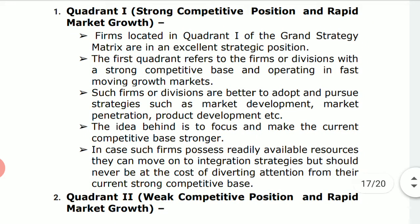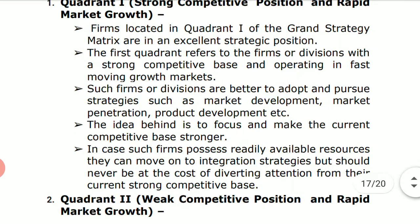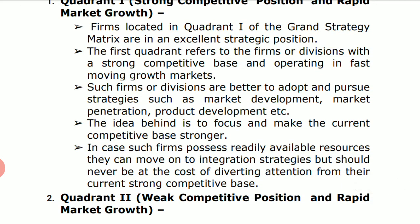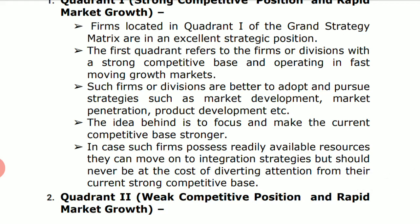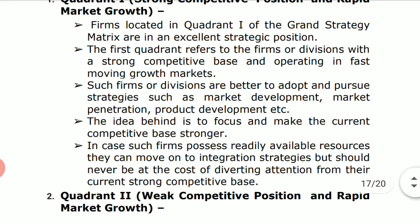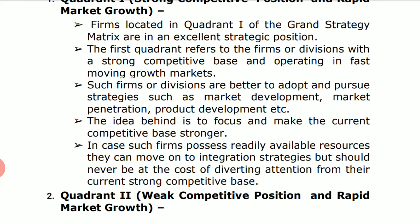Firms located in quadrant one of the Grand Strategy Matrix are in an excellent strategic position because everything is strong — their competitive position and rapid market growth. The first quadrant refers to firms or divisions with a strong competitive base operating in fast-moving growth markets. Such firms should pursue strategies like market development, market penetration, and product development.